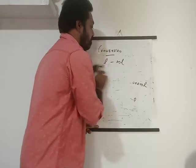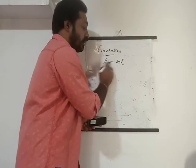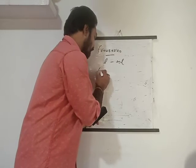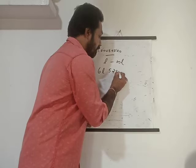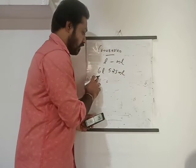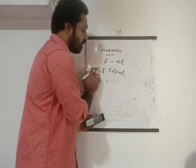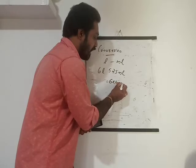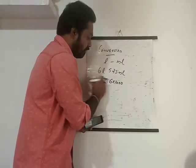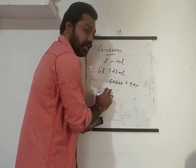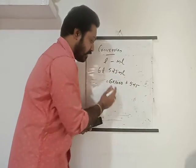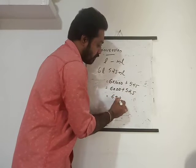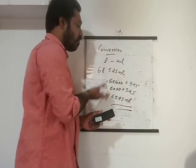Now for a mixed conversion: six liters and five hundred and twenty-five ml — convert everything into milliliters. The liter part needs conversion: six into one thousand equals six thousand ml. The 525 ml is already in milliliters. So six thousand plus five hundred and twenty-five equals six thousand five hundred and twenty-five ml.